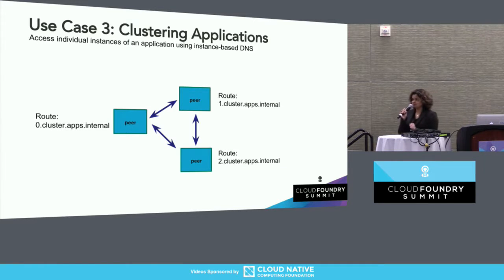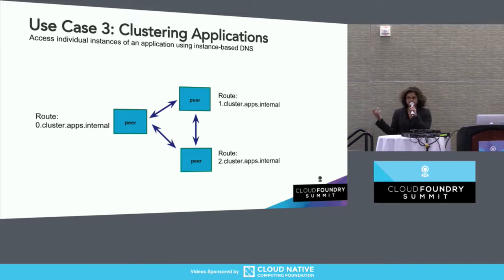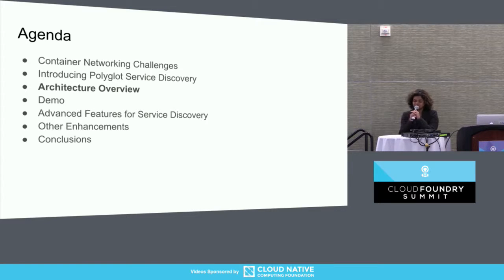The third use case — and this is one we're eager to hear from the community about — is for clustering apps. If you have apps that need peer-to-peer communication, or apps that use TCP and UDP to communicate between each other and need to access individual instances, you can use index-based routes. Every app, in addition to getting that overall load-balanced route, also gets a zero-dot or one-dot route for each instance. These are typically apps like ARCA clusters, LAN clusters, or other peer-to-peer applications. Angela is going to walk us through a deep dive on the architecture and then show a demo.